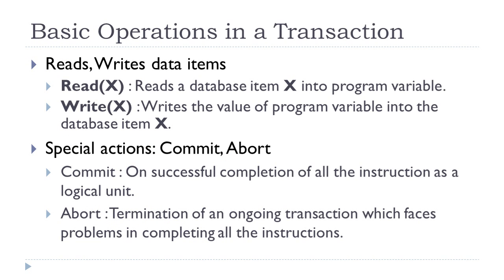There are some basic operations in a transaction: read and write. When I issue a read operation, that means I read a particular database item into the program variable. When I write a data item, that means I write the value from the program variable into the database. Two special actions are also there: commit and abort. Commit means if you have successfully executed all the instructions in a transaction, you can execute a commit command to make sure that everything is successfully saved.